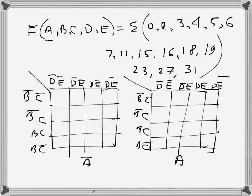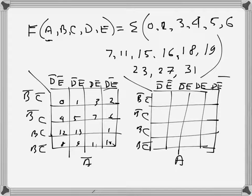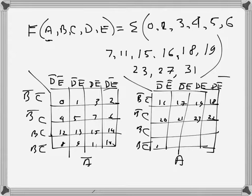Now I will identify the cells. The first K-map has cells zero through fifteen, and the second K-map has cells sixteen through thirty-one. So we have all 32 cells numbered across both K-maps.